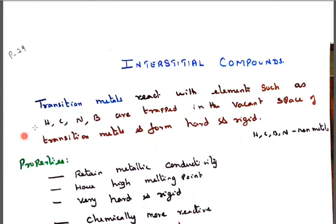So that interstitial compounds, the transition metals react with the hydrogen, carbon, nitrogen, boron. These are a small size of atoms. Transition metals are bigger in size and these small size will be accommodated to the space whenever they find the space.